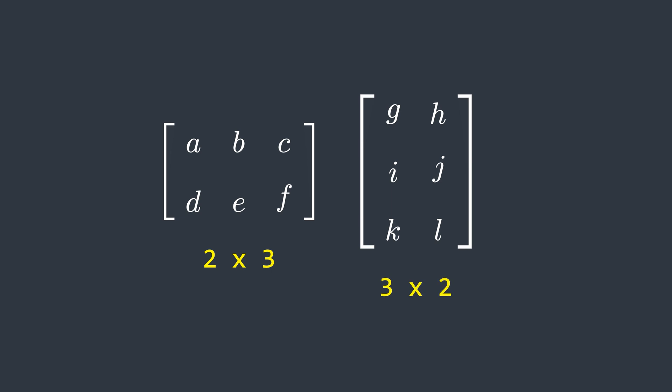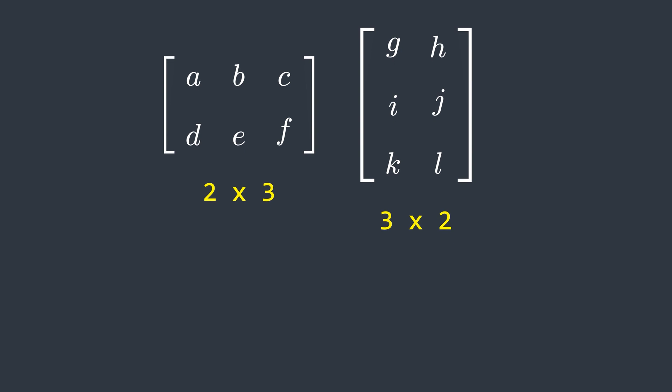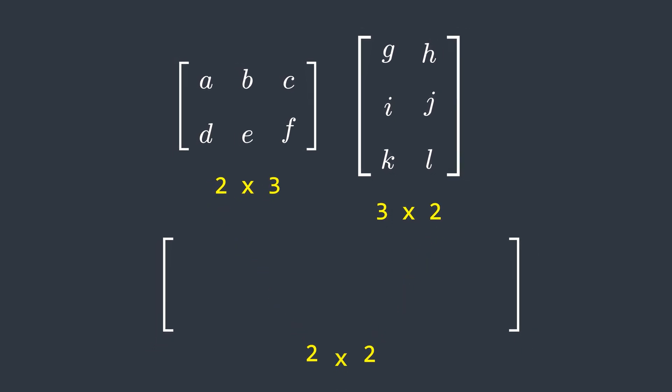Here we have two matrices that we need to multiply. One important thing to keep in mind is that for matrix multiplication to be valid, the number of columns in the first matrix must equal the number of rows in the second matrix. In this case that number is 3. The resultant matrix will have dimensions equal to the rows of the first matrix and the columns of the second matrix — in this case, a 2×2 matrix.